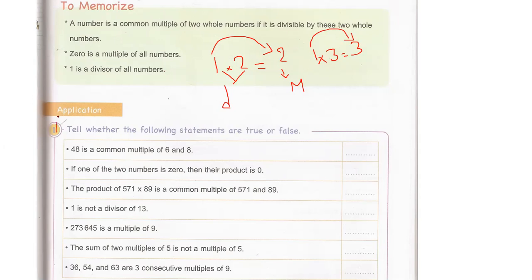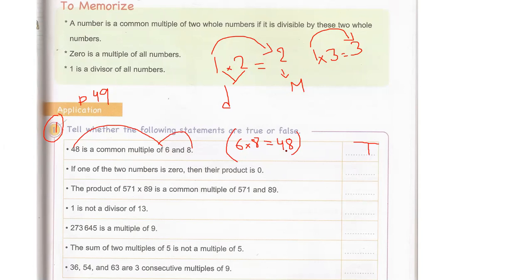Let's do exercise one, page 49. Please copy this question on your math books. Tell whether the following statements are true or false. First: 48 is a common multiple of six and eight. Is 48 in table six and in table eight? Yes, it's in both tables. So it's true, because six times eight equals 48, so 48 is in table six and in table eight — it's in both tables, so it's a common multiple.